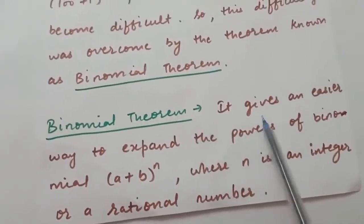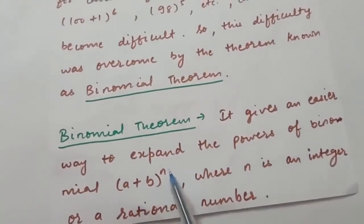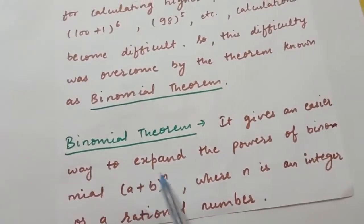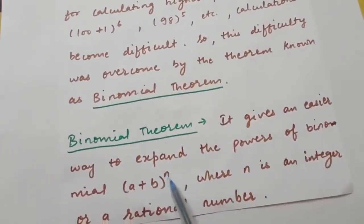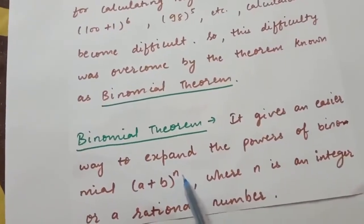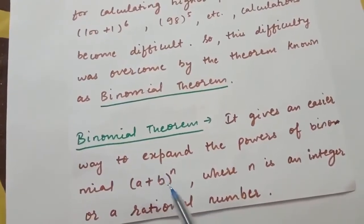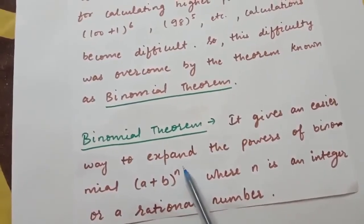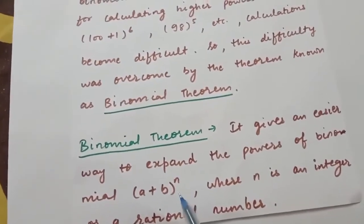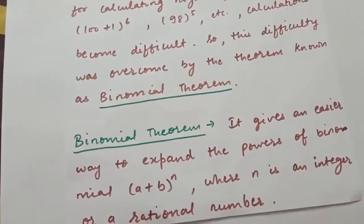Binomial theorem gives an easier way to expand (a + b)^n, where n is the index. In general, n can be any integer or rational number. However, in our chapter we will only deal with cases where n is a positive integer — we will not handle negative integers or rational numbers, only binomials whose index is a positive integer.